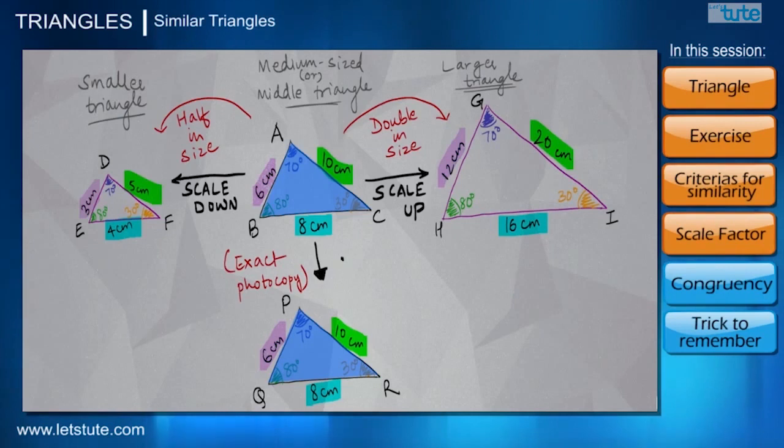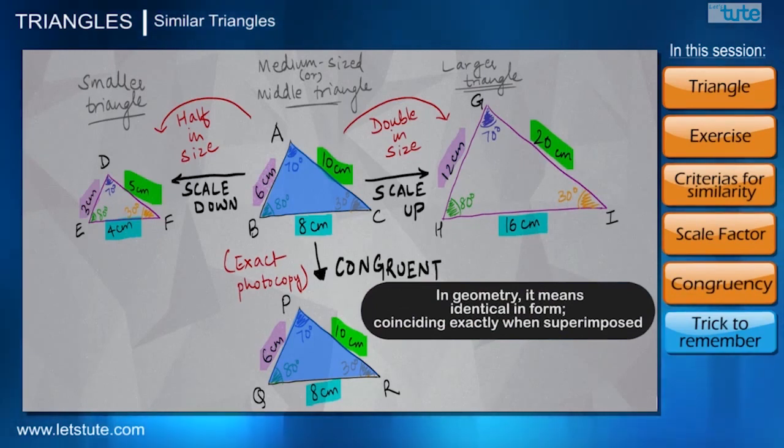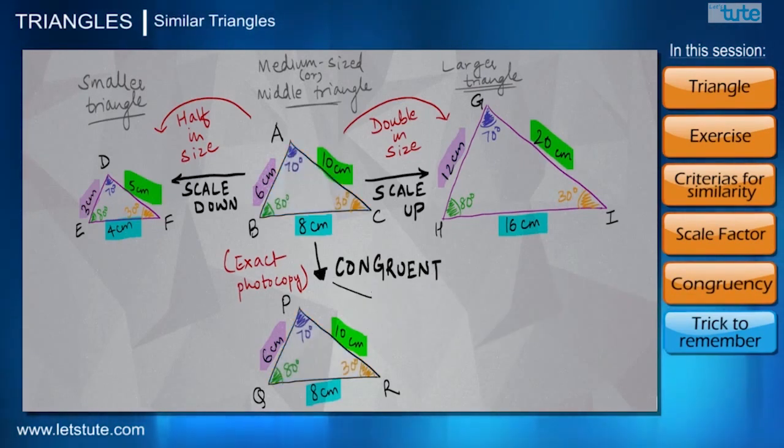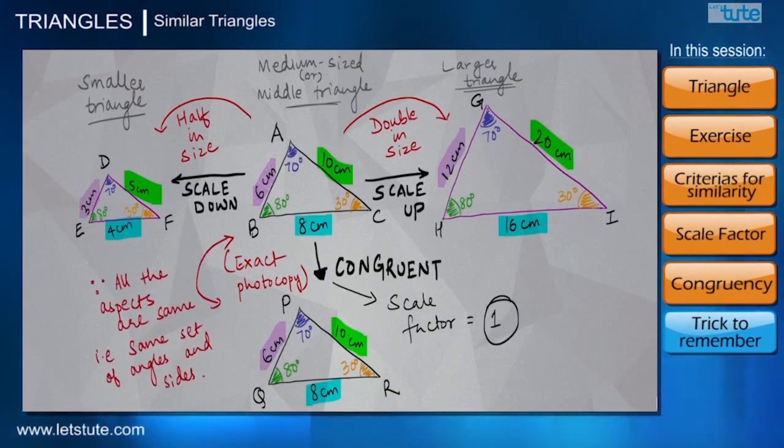And in such a case, whenever two shapes or two figures are exactly the same, then in geometry we call them congruent. So we can say triangle ABC and triangle PQR are congruent to each other. Now what can we comment about the scale factor over here? Scale factor is definitely going to be just 1, why? Because all of its aspects are the same.